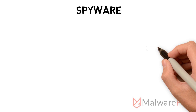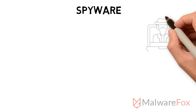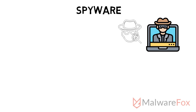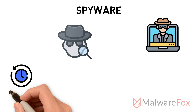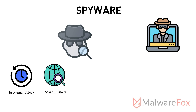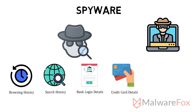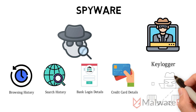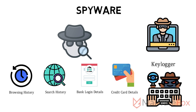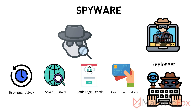Spyware: Spyware is used to track the user's activity without their knowledge. It actively monitors the actions taken by the user. It records your browsing history, search history, and financial details such as banking login details or credit card details. Keylogger is another type of malware that collects the user's keystrokes. All this information is sent to its maker using the internet.